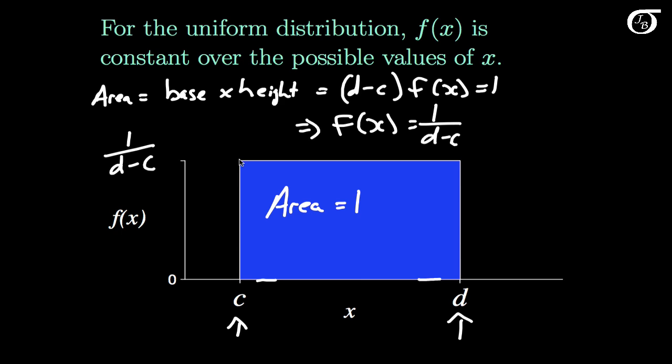So the height of the curve is 1 over d minus c, but it drops to 0 outside of the interval c to d.